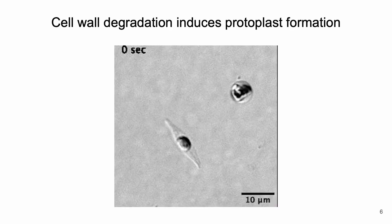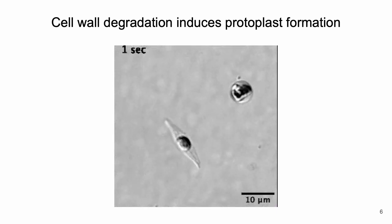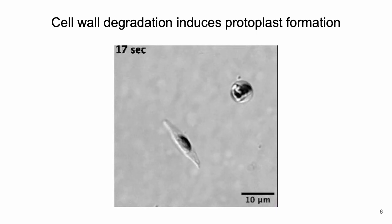On the previous slide, we observed several round cells after two hours of treatment but didn't observe any of these cells forming. So we decided to treat the cells with a cell wall-degrading enzyme, alkalase, and observe these cells in real time. Here we indeed see a protoplast emerging from the cell.